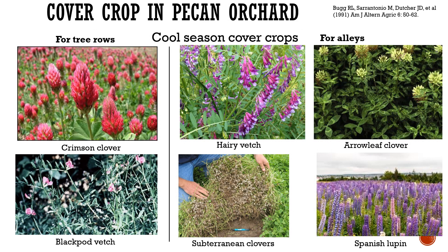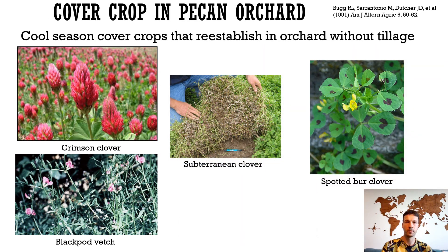Cool season cover crops can be planted throughout pecan orchards. Three rows could be devoted to early maturing winter cover crops, which have mature seeds by the time pecan is in full leaf and compete little with the trees. Alleys could be planted with mixed winter annual cover crops, including later maturing plants. Many cool season legumes produce, without tillage, a good number of volunteer stands among warm season perennial cover crops and do not require reseeding.